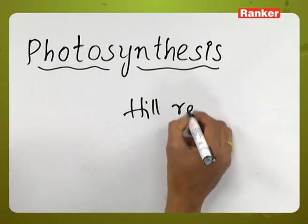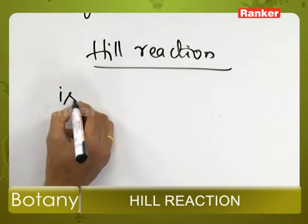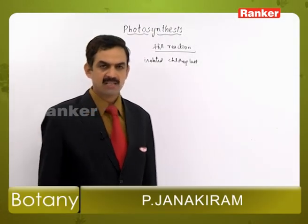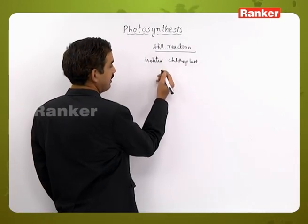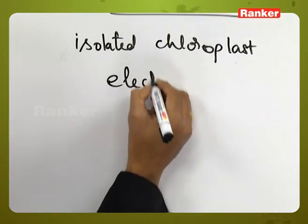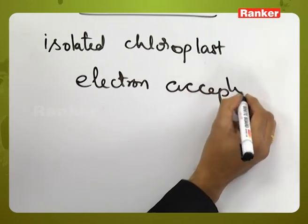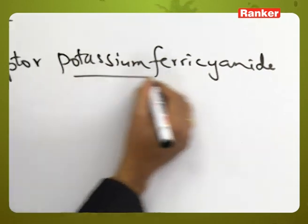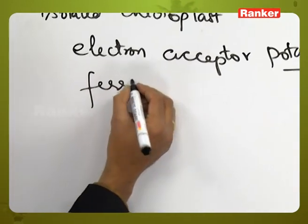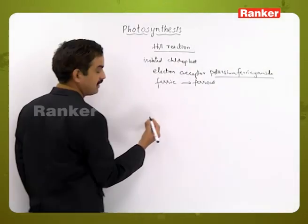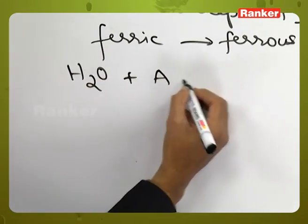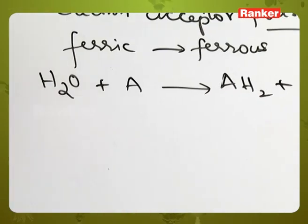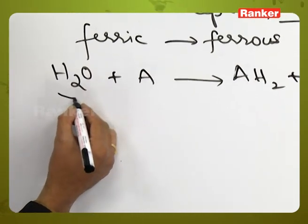Hill reaction. Hill had isolated the chloroplast and illuminated it in the absence of carbon dioxide. In this process, he observed that in the presence of an electron acceptor — potassium ferric cyanide — the ferric compound is converted into a ferrous compound. The water molecule plus an unknown compound AH₂ releases oxygen. The Hill reagent or Hill oxidant is used here, where water gets oxidized.